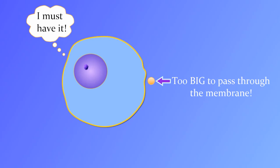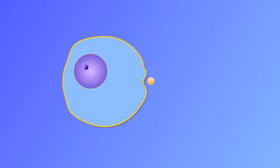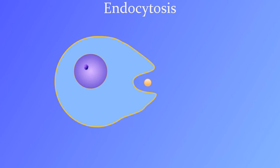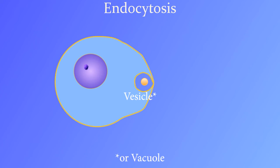Sometimes, a particle that the cell needs to bring in is too big to pass through the membrane. In such cases, the cell can do endocytosis. During endocytosis, the cell membrane encloses the particle that the cell wants, trapping it. The membrane then pinches off to form a vesicle with the particle inside. The vesicle can then move into the cell.